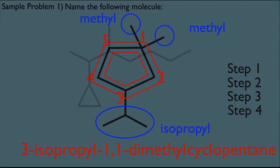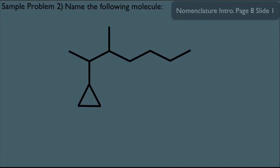Now, what if you have a ring in your structure but it's not the biggest part? Let's look at step one. Since the ring is not the biggest part of this molecule, this long chain becomes the main show and defines the parent name. If the ring were bigger than the chain, the ring would be the main show and the chain the substituent. In the box you should count seven carbons, making the parent name heptane.